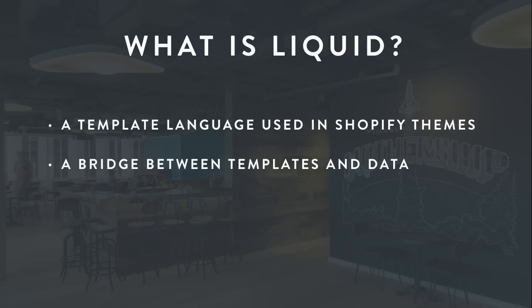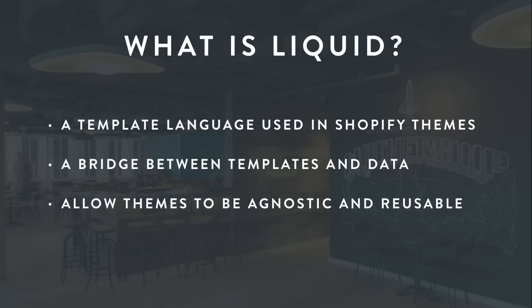What Liquid actually does for us is create a bridge between our template files and a data store. In our case the data store is a Shopify store, and it allows us to have constructs within our files that, when compiled on the Shopify platform, will be replaced with data from a particular store. This allows our themes to be agnostic and reusable — Liquid doesn't have any concept of the actual data it's pulling in. It doesn't need to know your store name or what products are in it; it just grabs the data relevant to whichever store the theme is applied to.